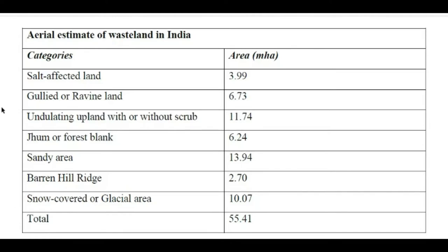Salt-affected land also increases because of high withdrawal rates of groundwater. Water erosion causes soil erosion, where the top layer of soil is carried away with water, forming gullies, small channels, and ravines (khhandak). In such land, we cannot do agriculture activity, build houses, or roads — it becomes waste. This water erosion wasteland accounts for approximately 6.73 million hectares out of 55.41 million hectares.